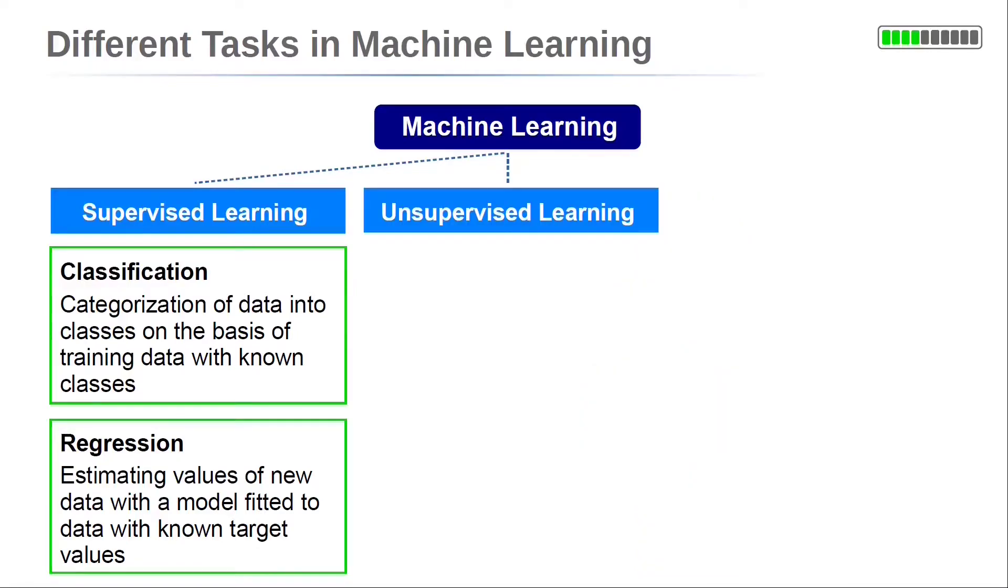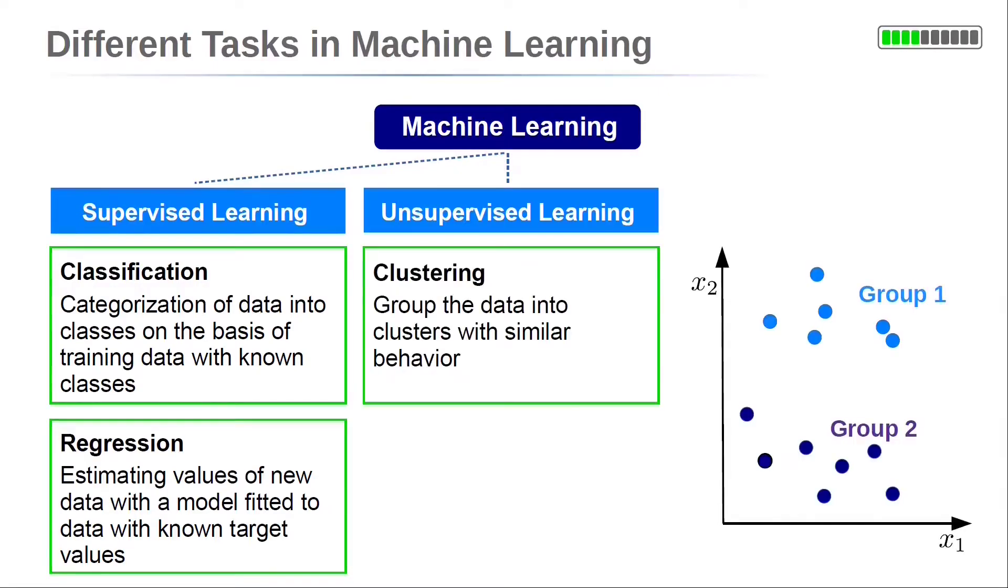A different category of machine learning algorithms is unsupervised learning. Here, you don't have a special target variable. An example are clustering methods. A clustering algorithm tries to group data with similar behavior. If you don't know much about your data, this can be a good starting point. You can get an overview of groups and structures inside your data.